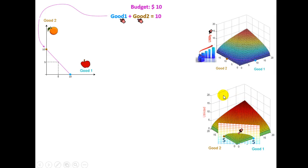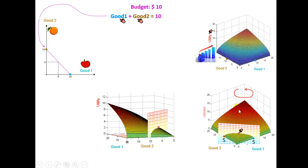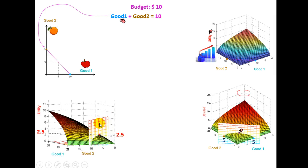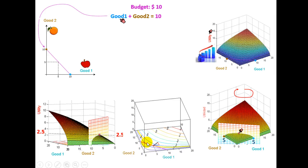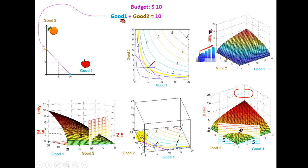If we rotate this graph, we can see that at this point we get the maximum utility, which is 2.5. If we turn in the other direction and remove the surface, taking only the base of this parallelepiped, we get the 2D view. The solution is found at the point (5, 5): buying five of good one and five of good two gives a level of satisfaction of 2.5. Along the entire yellow indifference curve, the function evaluates to the same value of 2.5.